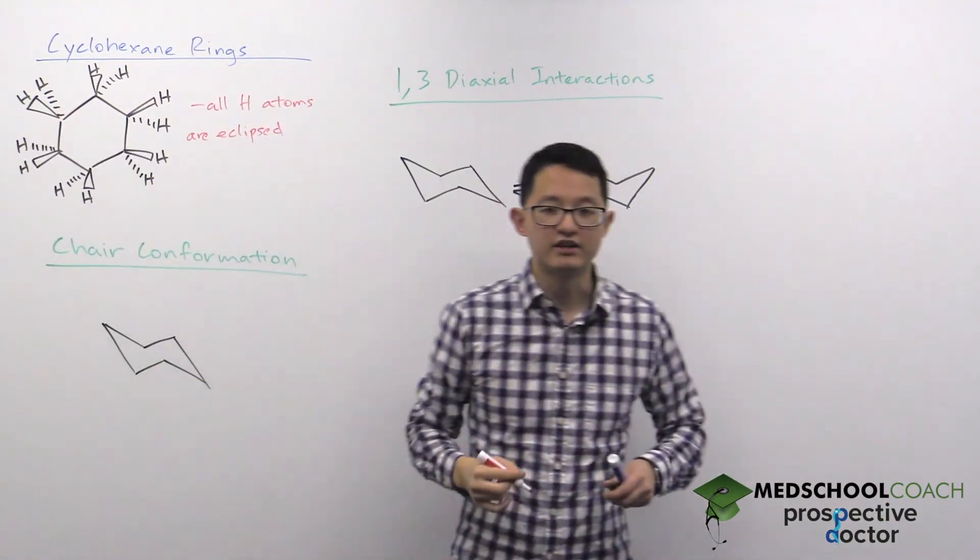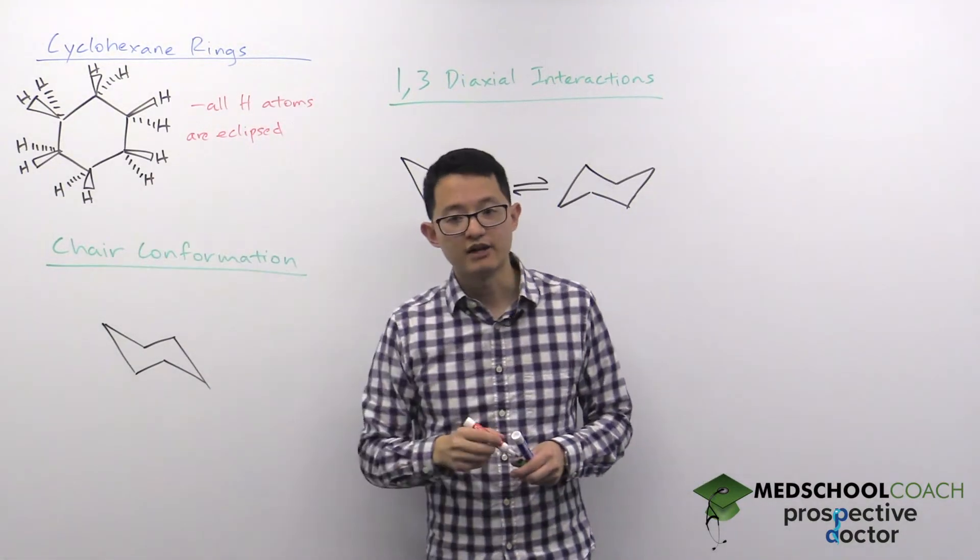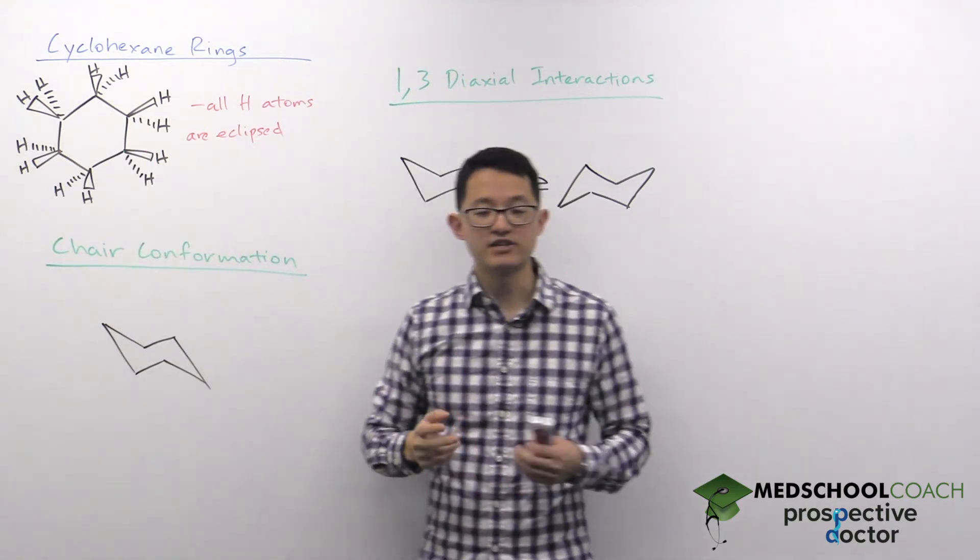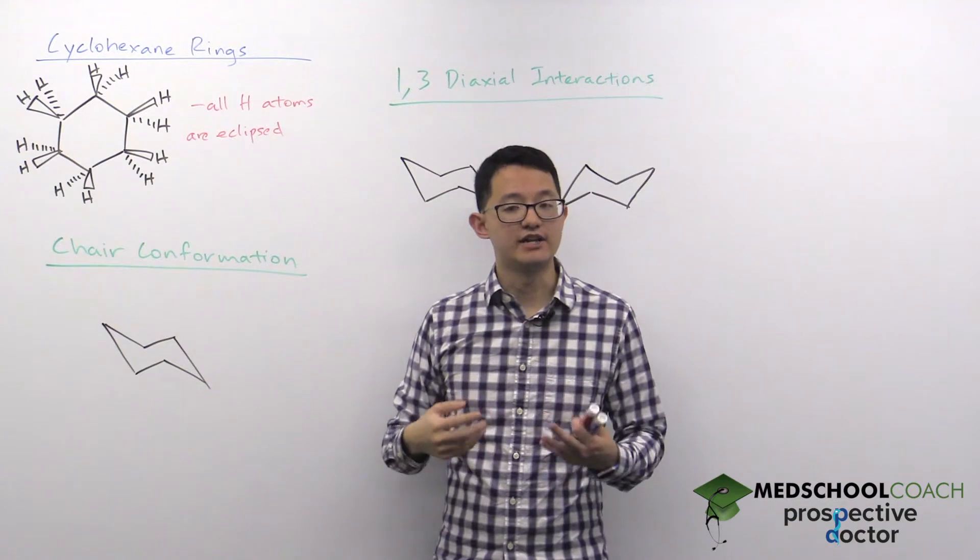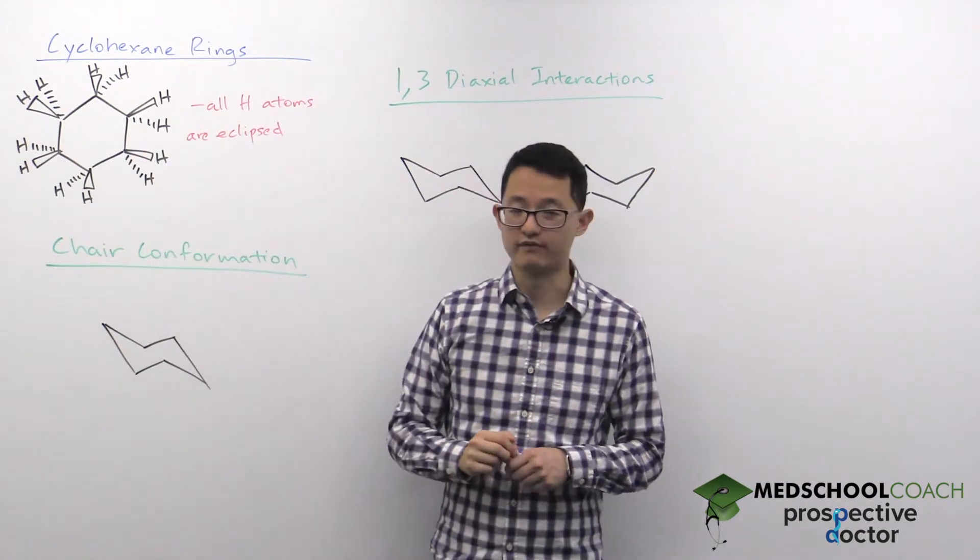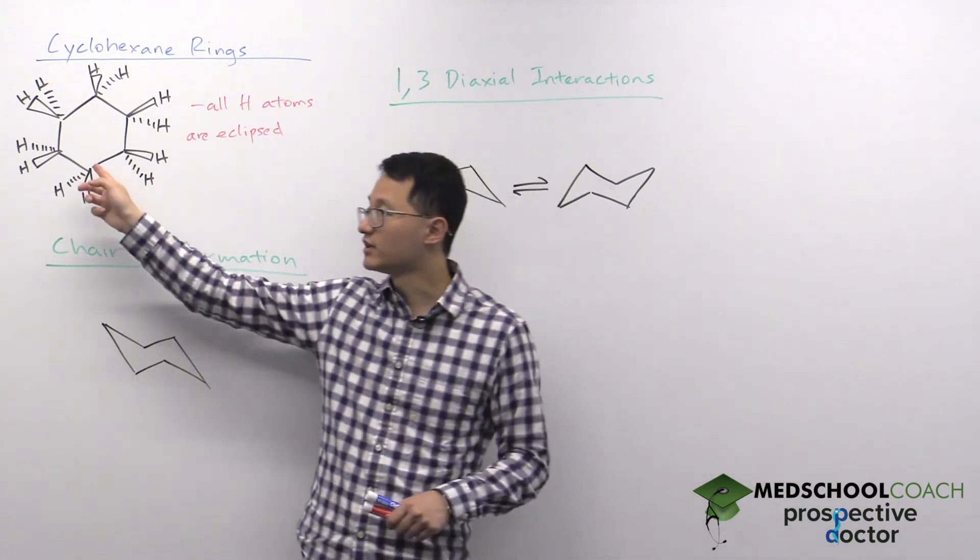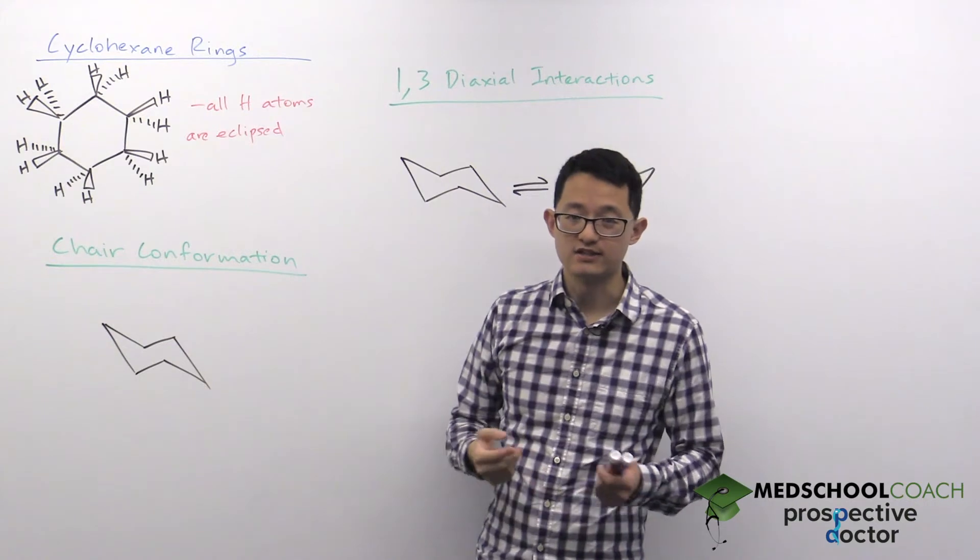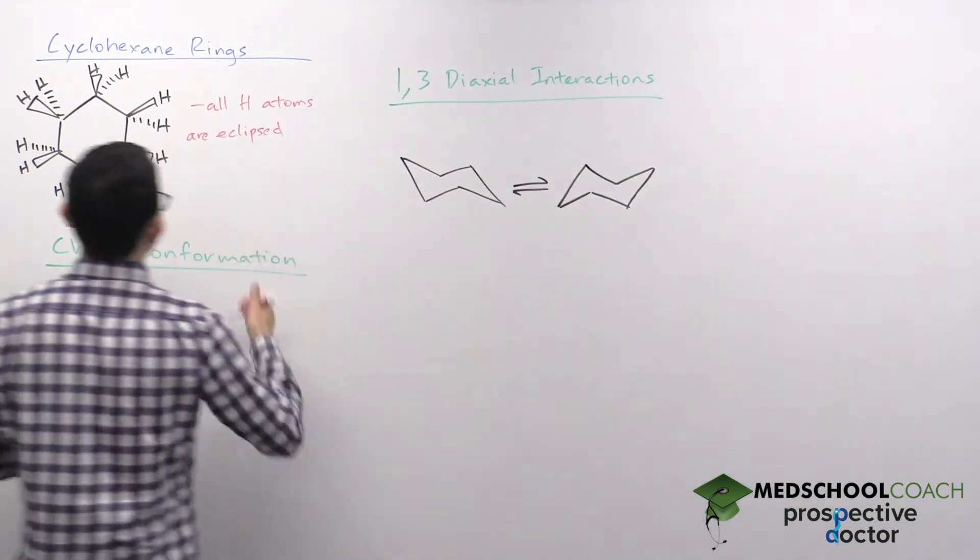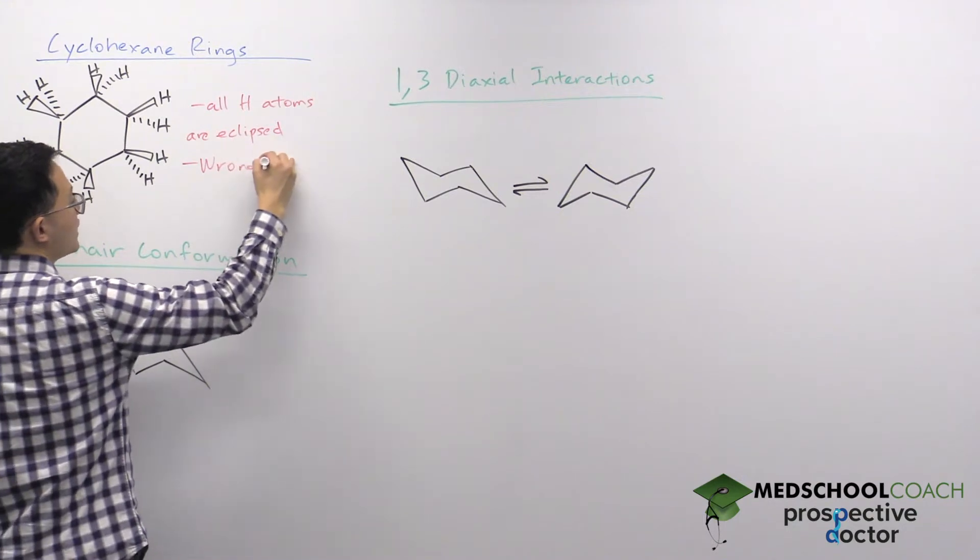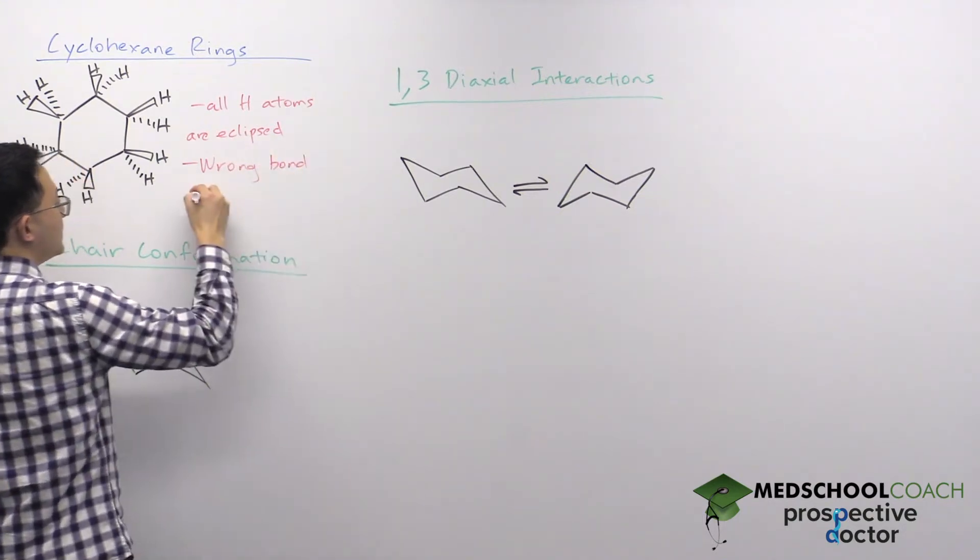Another issue you might have noticed: if you look at this diagram, all of the carbons are sp3 hybridized. Sp3 hybridized atoms have a tetrahedral electronic geometry and should have bond angles close to 109.5 degrees. However, if you look at these bond angles within this hexagon, they're not 109.5 degrees. So here we have the wrong bond angles.